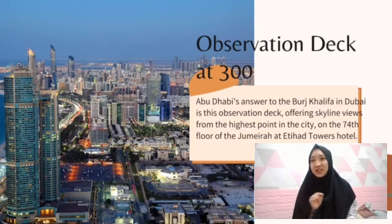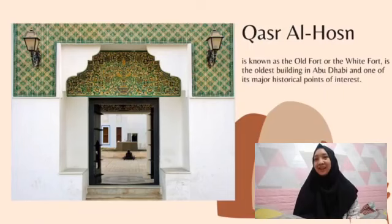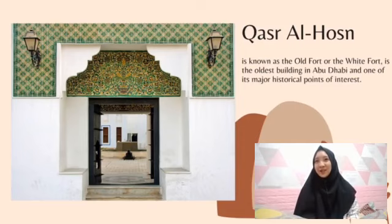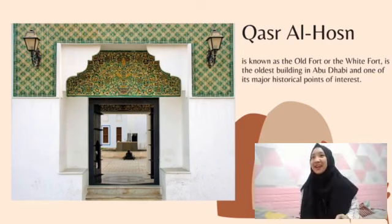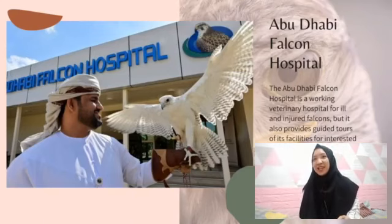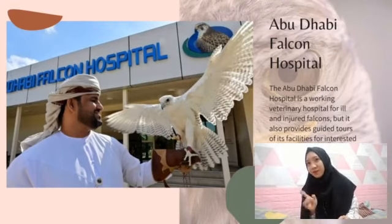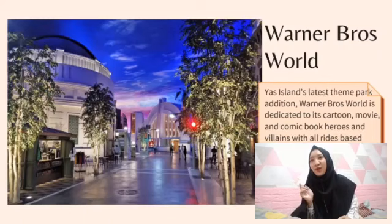The observation deck offers skyline views from the highest point in the city, on the 74th floor of the Jumeirah at Etihad Towers Hotel. Number 7 is Qasr Al Hosn. It's known as the Old Fort or the White Fort. It's the oldest building in Abu Dhabi and one of its major historical points of interest. The place was built in 1793 as the residence of the ruling family and the seat of government. Number 8 is Abu Dhabi Falcon Hospital. This is a working veterinary hospital for ill and injured falcons, but it also provides guided tours of its facilities for interested visitors.